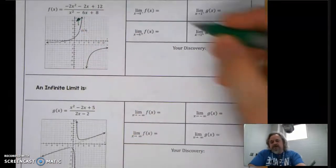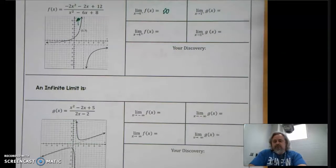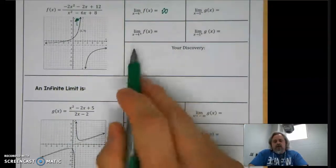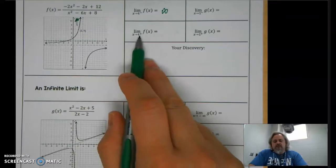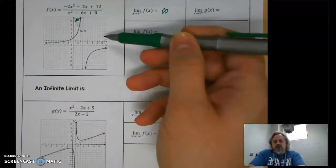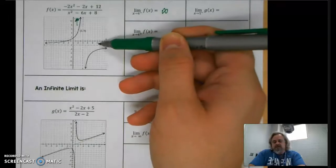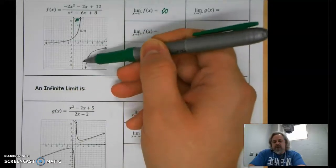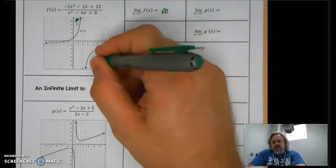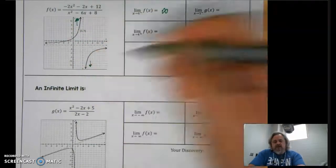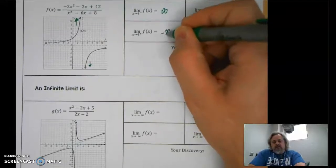From the left side, as you approach x = 4, the function curves upward toward positive infinity. Taking the one-sided limit from the right-hand side, I'm now approaching 4 from the right. You can see the function bending and following that vertical asymptote, going down toward negative infinity.